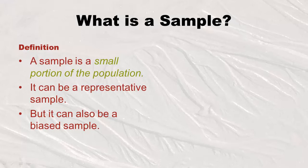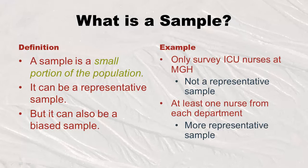A sample is a small portion of that population — it can be a representative sample, but it can also be a biased sample. Going back to MGH, if we surveyed only nurses in the intensive care unit, that would be a sample but not a representative one. More representative would be asking at least one nurse from each department. The key concept is that a sample is just a small portion of the population.